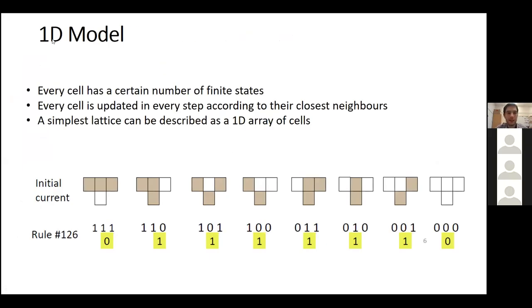Cellular automata — in the first homework we had an agent-based model where we were more interested in individual agents. In cellular automata models, we are more interested in the characteristics of a grid and the local properties of an area. This model focuses on cells. In the simplest 1D model, each cell has a finite number of states — here for simplicity we start with zero or one, where one means the cell is live and zero means the cell is dead.